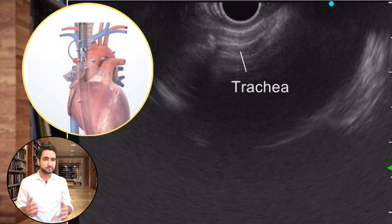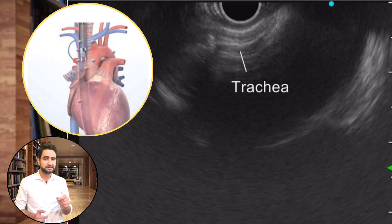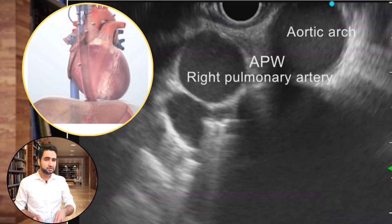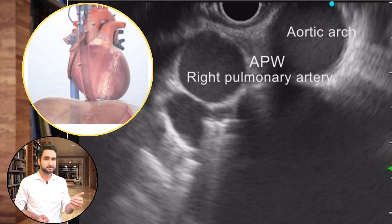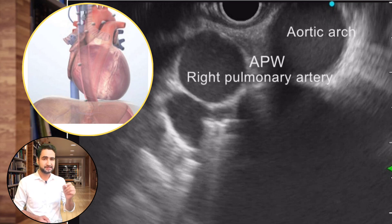As you pull the scope from the tracheal bifurcation, you will be able to identify the trachea visualized as multiple linear hyperechoic structures. Now withdraw the scope slowly to follow the trachea towards the superior side — that is the right side of the screen. While doing this, turn the scope counterclockwise till you reach a position where the right pulmonary artery is on the left side of the transducer and the aortic arch is on the right side. That's why you are now able to visualize the cross-section of the right pulmonary artery on the left side of the screen and the cross-section of the aortic arch on the right side. The region sandwiched between these two vessels is an area called the AP window.